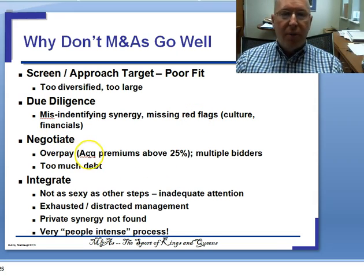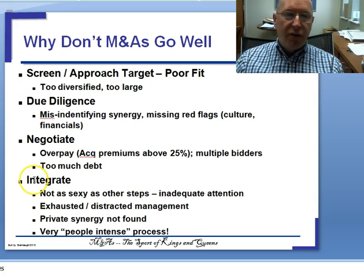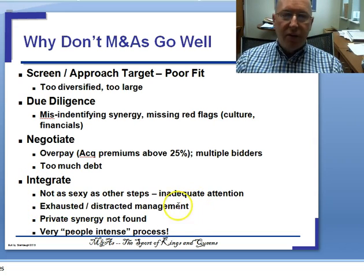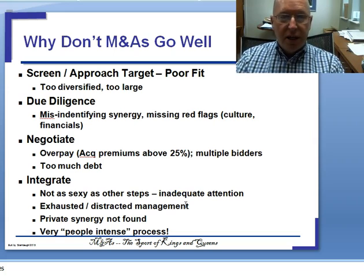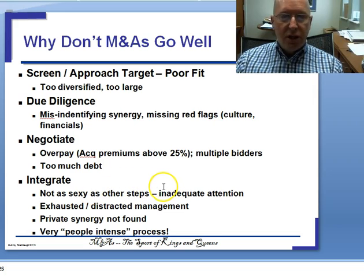What doesn't go well: sometimes it's just a poor fit. In due diligence, you didn't do a good job — you missed cost flags and problems in the company. In the negotiation phase, a common problem is overpaying. Acquisition premiums above about 25% would be considered too much. Multiple bidders drive the price up, and overpaying often leads to too much debt. Then, if the management team is overly focused on doing deals because doing deals is sexy, they're paying attention to the M&A process and not actually running the business.